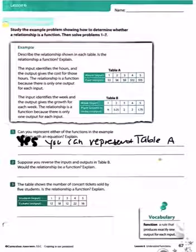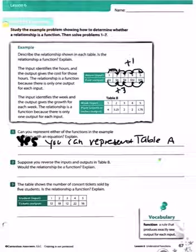You write the equation by finding the rate of change. 3 to 6, 6 to 9, 9 to 12, 12 to 15, you're going up 3 each time. To go 1 to 2, 2 to 3, 3 to 4, and 4 to 5, you're going up 1. Your rate of change is $3 per hour. So your equation would be Y equals 3X.